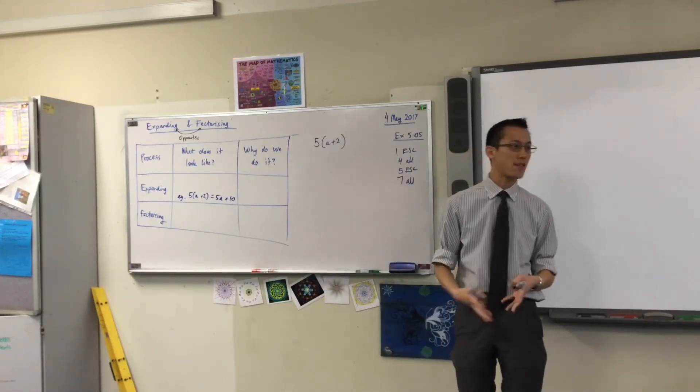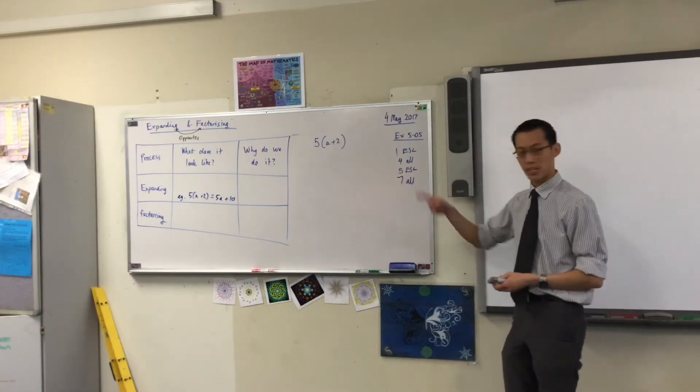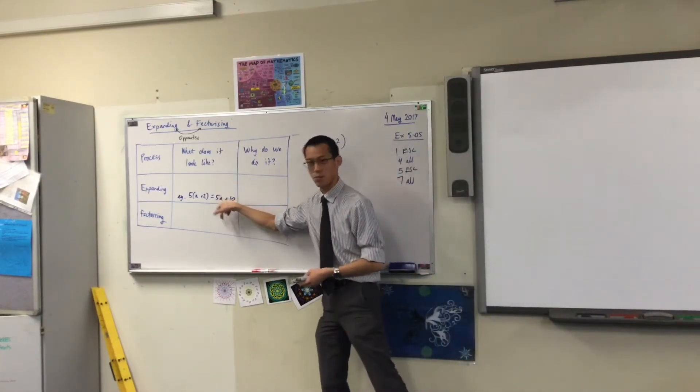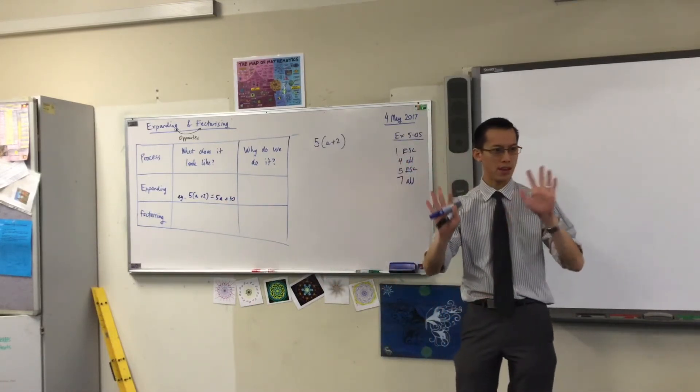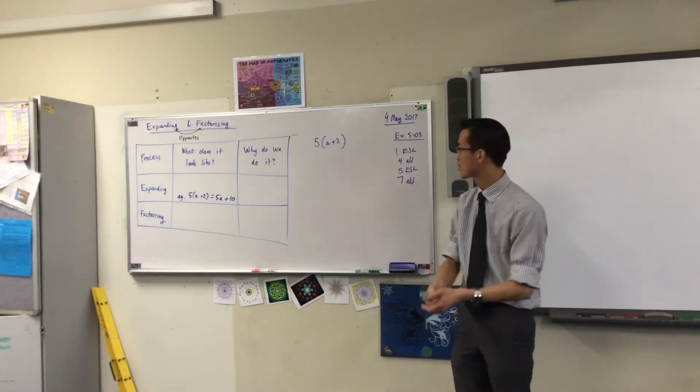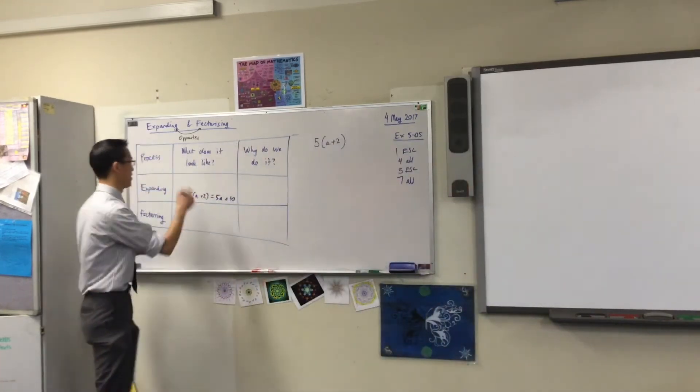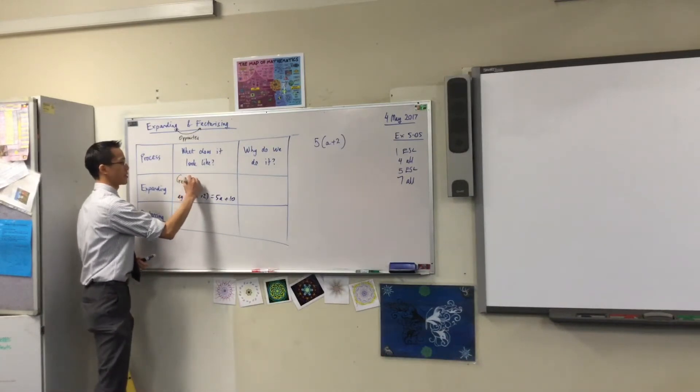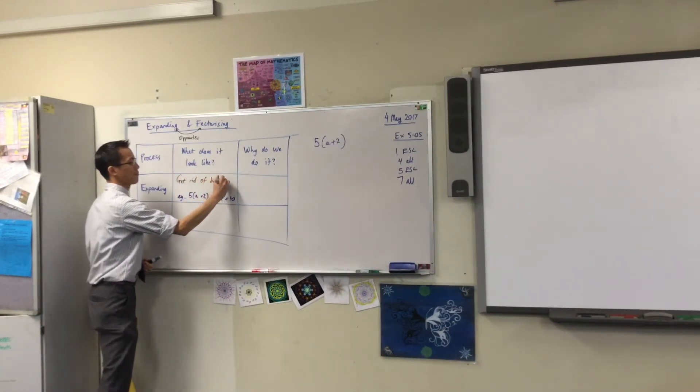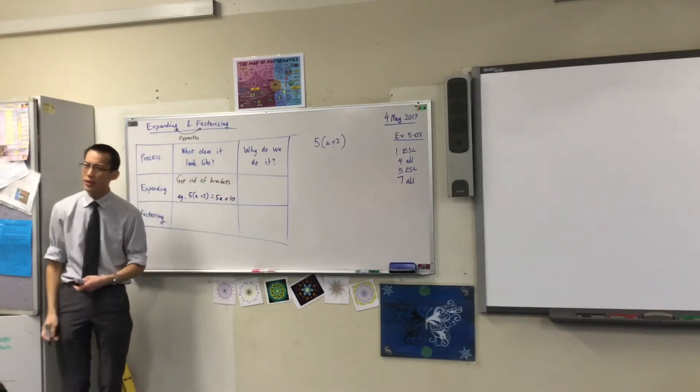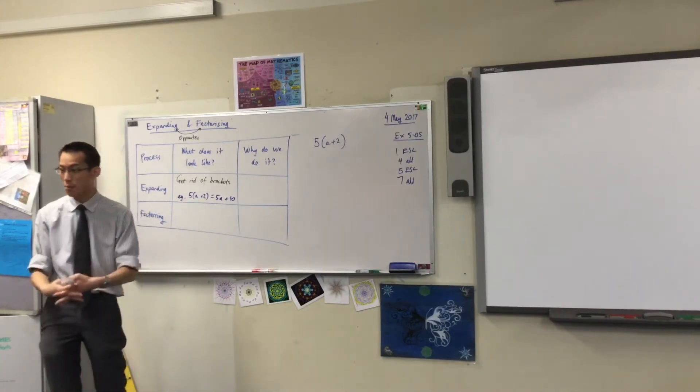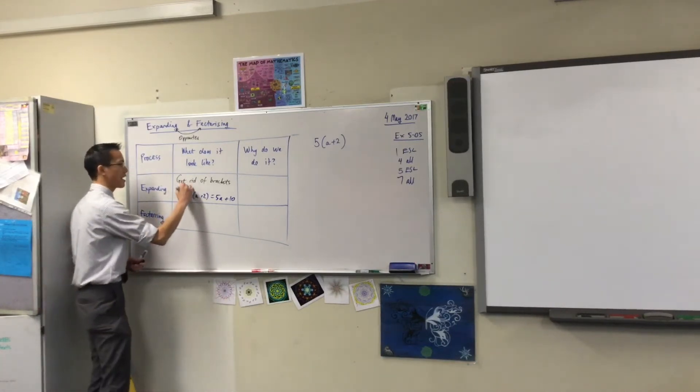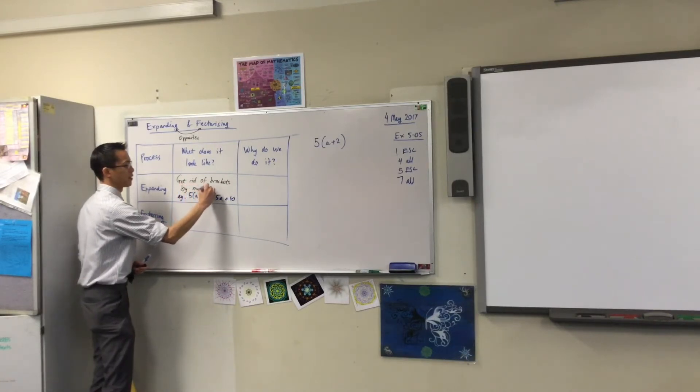You're sitting down with a year 7 or 8 student, and they've never seen this before. You can explain how to do it, like where the 5a comes from and where the 10 comes from, but what are you actually doing? What's the difference between left and right? Probably what most of you would say is, expanding looks like get rid of the brackets. How did we get rid of the brackets? What did you do?